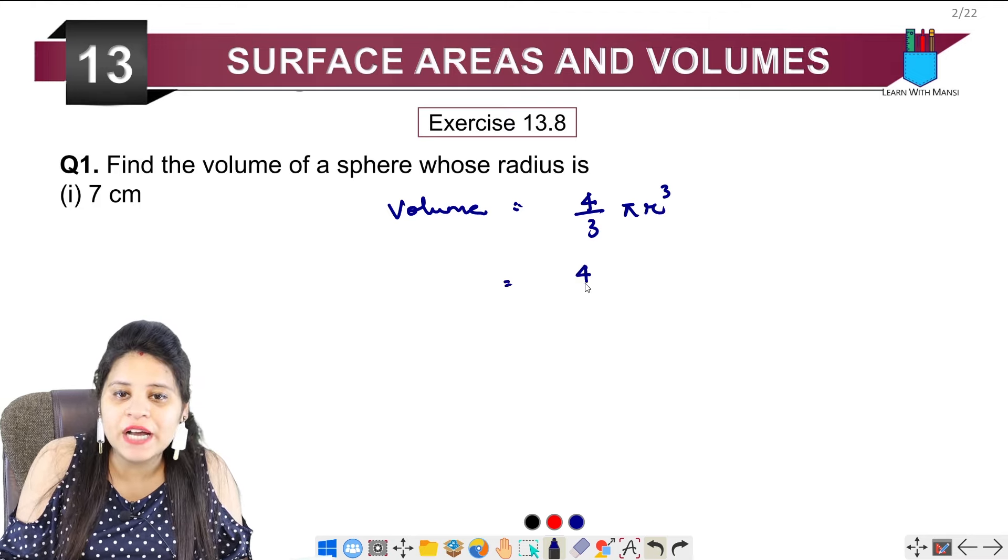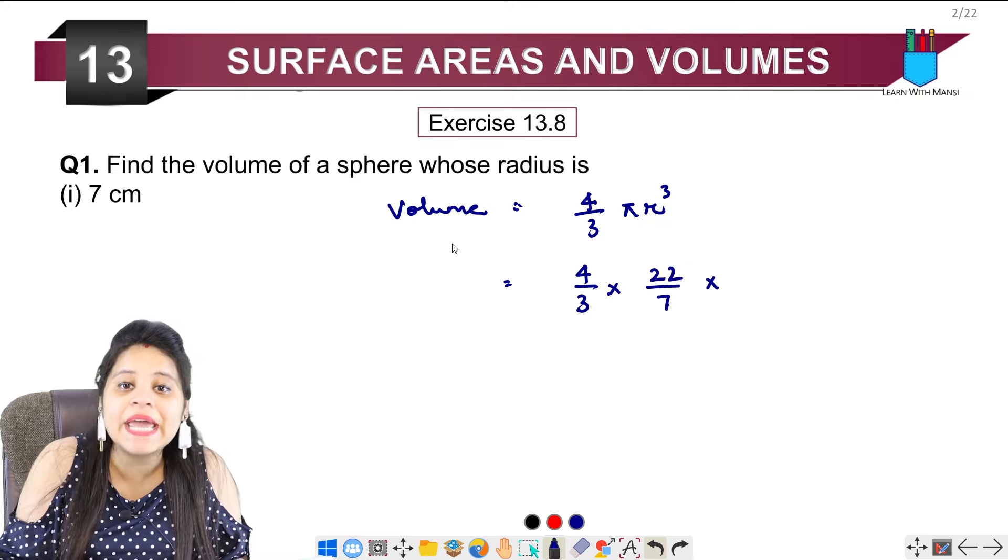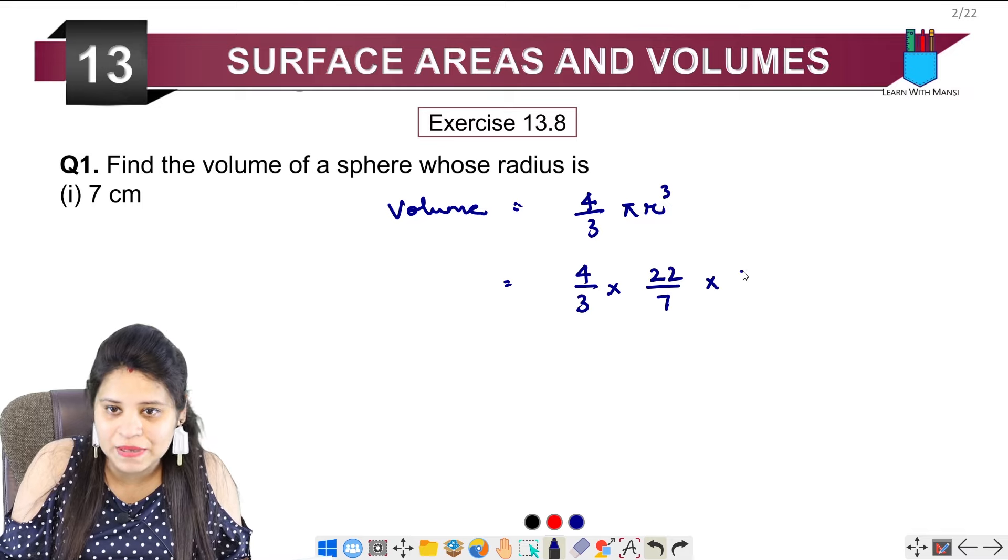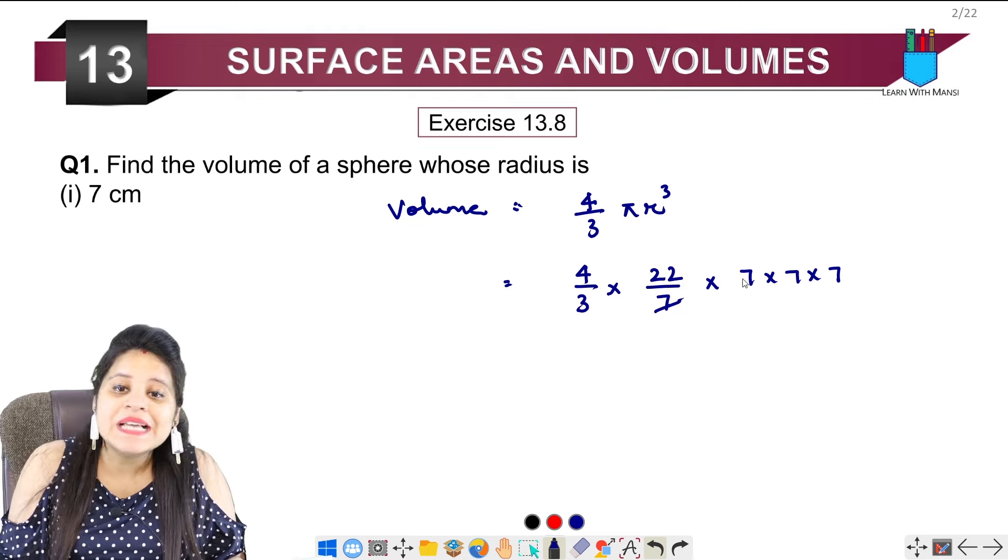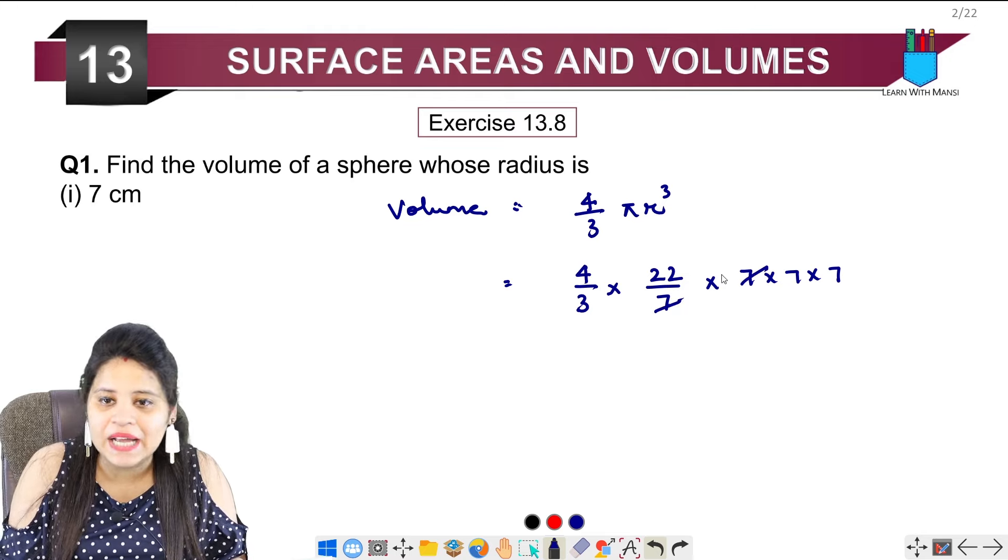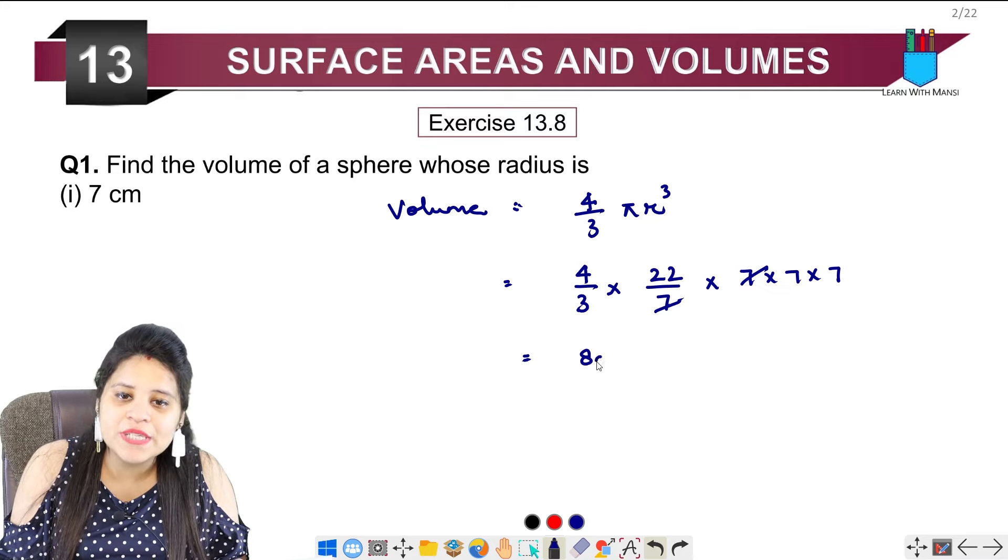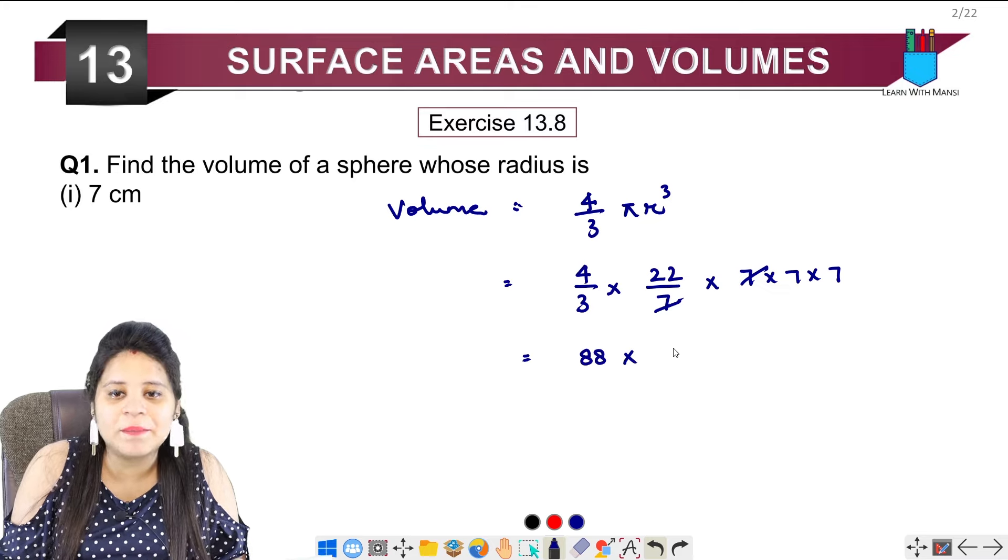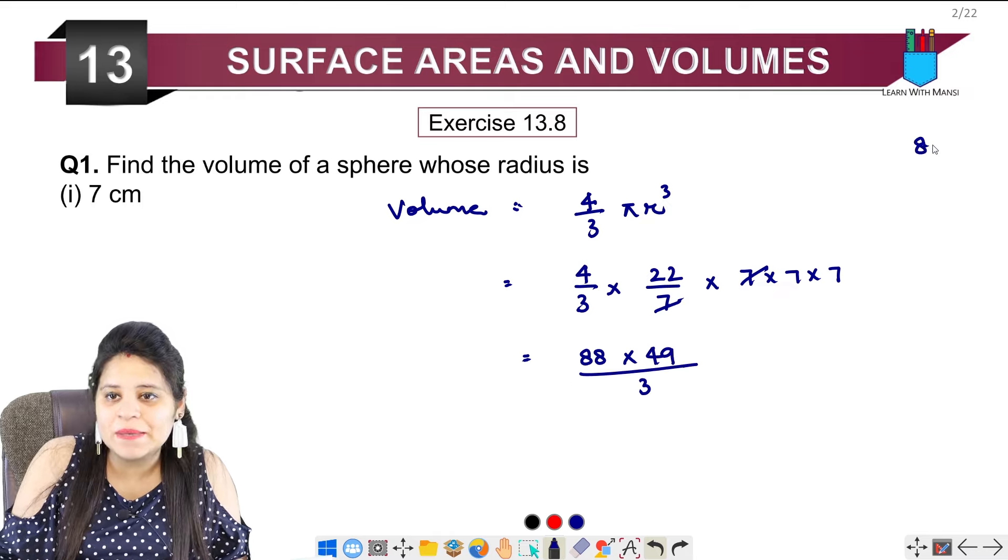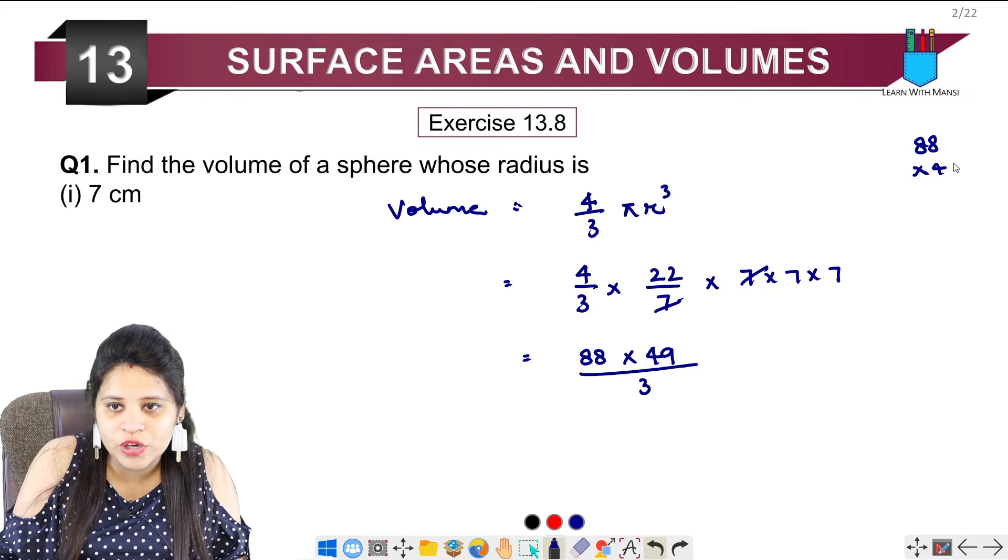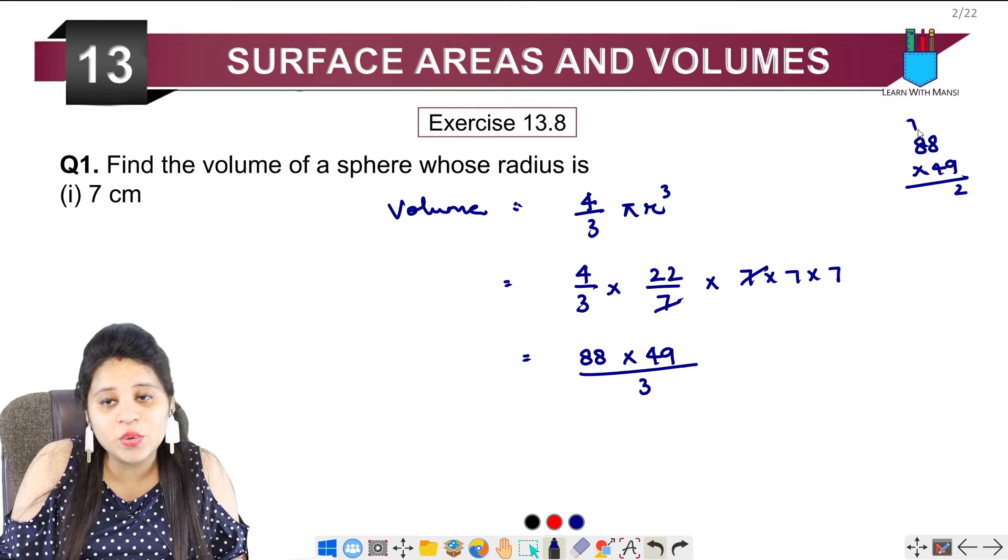So this will be 4 upon 3, pi is not given here so we will take 22 upon 7, r is 7, it means 7 into 7 into 7 because r is cube. 7 from 7 will cancel. If we have to cancel something here, we need to multiply it. We will take 22 to 4, 4 to 8 multiplied by 7, 7 is 49 and upon 3 is 3. So we multiply here, we will get 88 to 49.